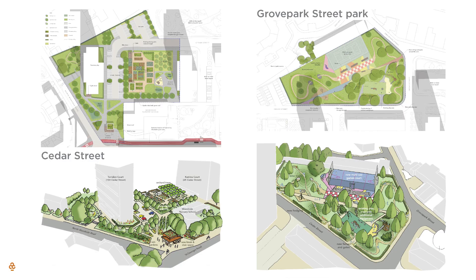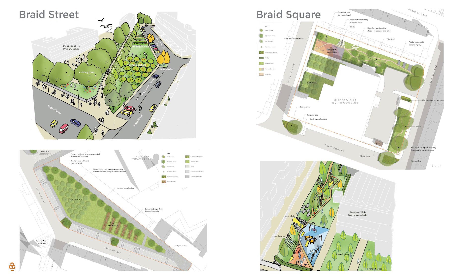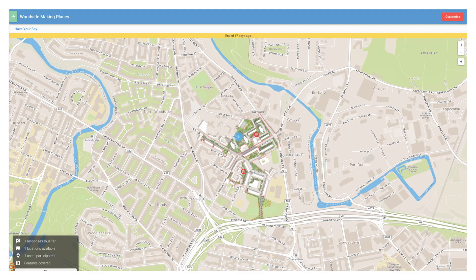For the second stage of consultation, we're evaluating our processes and looking at how we can improve. We found static plans to be quite difficult for some of the community to orient themselves on and read without one of our team being there in person to offer guidance. So we're now engaging with Place Changers, an online consultation tool which offers location-based commenting. We can export a georeferenced image of our plan straight from Vectorworks and upload it onto Place Changers in just a few clicks.